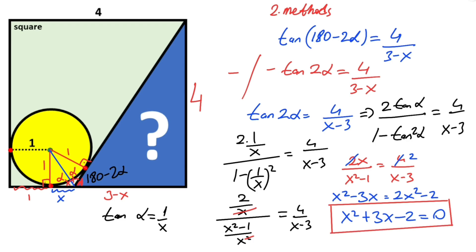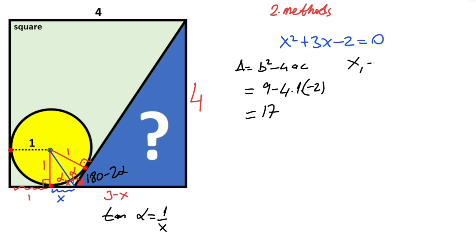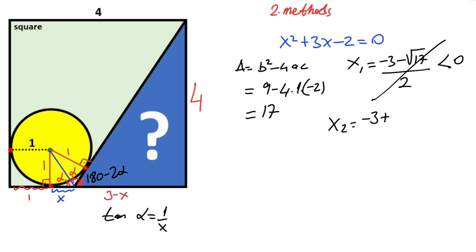We get a quadratic equation. Calculating the discriminant: delta equals b squared minus 4ac equals 9 minus 4 times 1 times minus 2, therefore delta equals 17. So the first root equals (minus 3 minus root 17) over 2, which is less than 0, so it is cancelled. The second root equals (minus 3 plus root 17) over 2, which is greater than 0. Therefore x equals (minus 3 plus root 17) over 2.